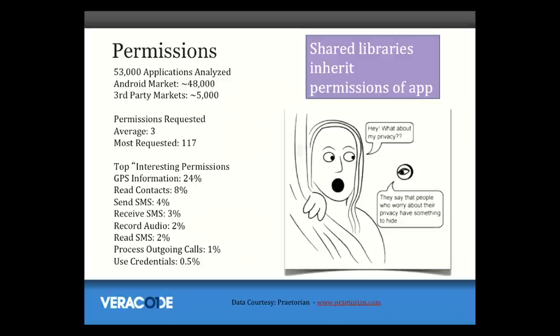Let's take a quick look at the permissions these apps are asking for. The company Praetorian did a survey of 53,000 applications analyzed in the Android market and third-party market. The average app requested three permissions. Some apps requested 117 permissions — obviously way too complex for a user to understand, like an end-user license agreement that's 45 pages long.